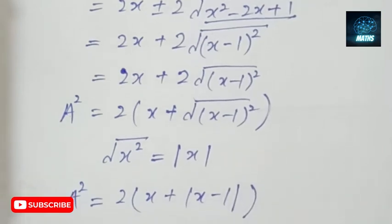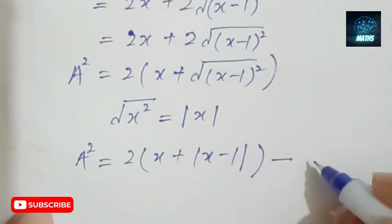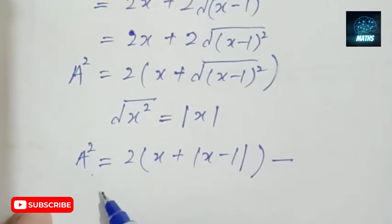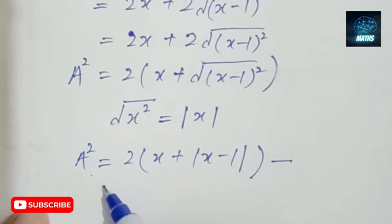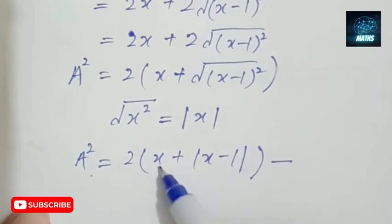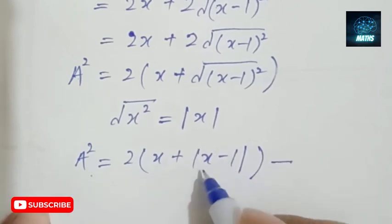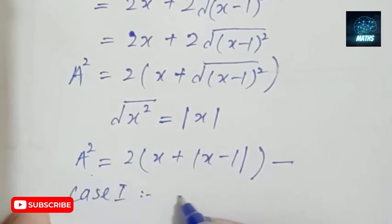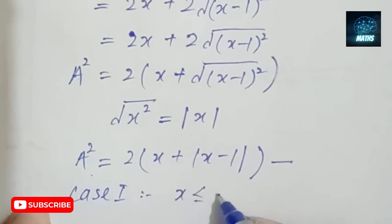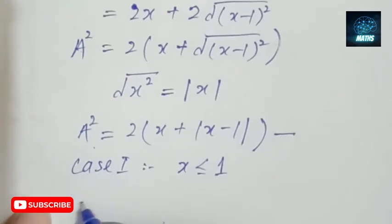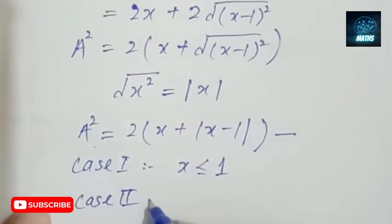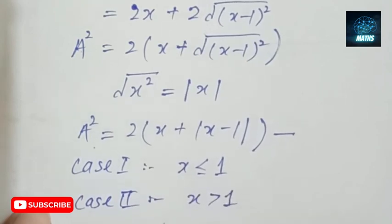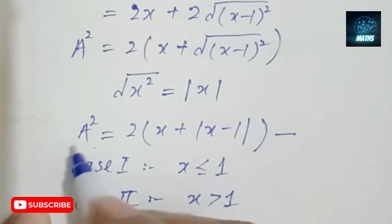This is the final equation: a² = 2x + |x − 1|. By solving this equation we can find the required values of x, which must be real and non-negative. There are two cases: Case 1 is when x is less than or equal to 1, and Case 2 is when x is greater than 1. We will find the values for both cases.